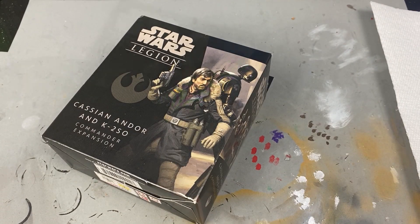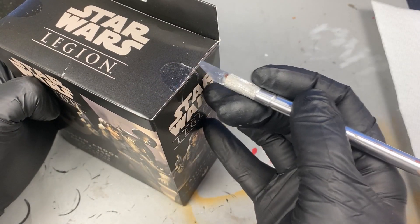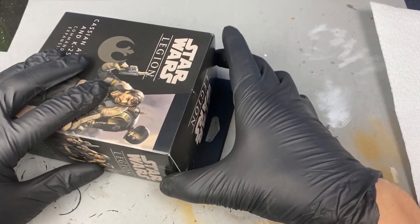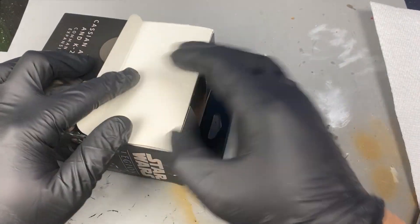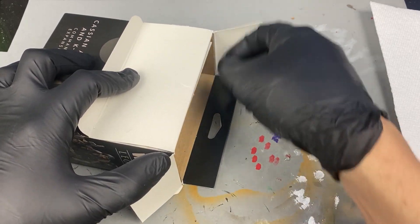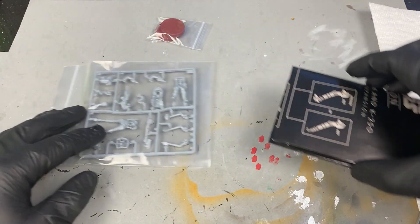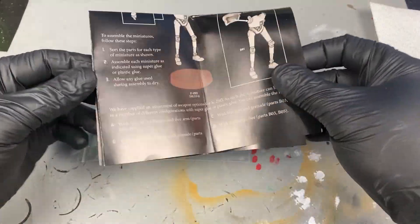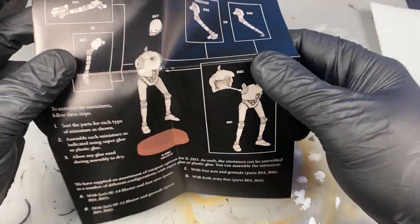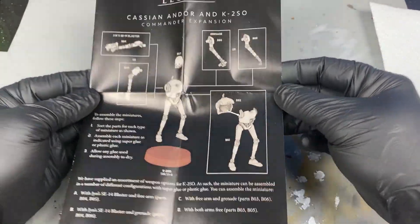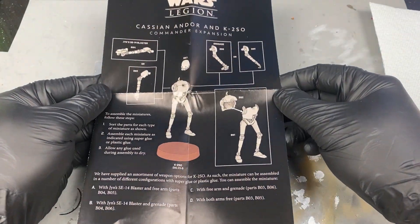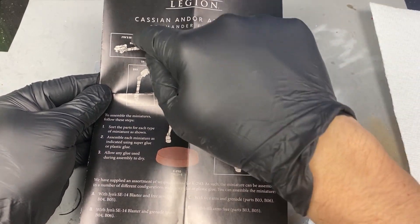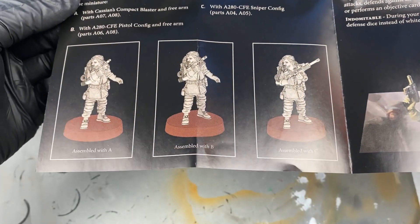If you've been looking for a video to learn how to paint Cassian and K2 for Star Wars Legion, congratulations you're being rescued. K2 comes with four different arm options, two left and two right. For the left arm we're choosing the comlink option, and for the right arm the blaster, because if Jyn Erso gets a blaster, why wouldn't he?